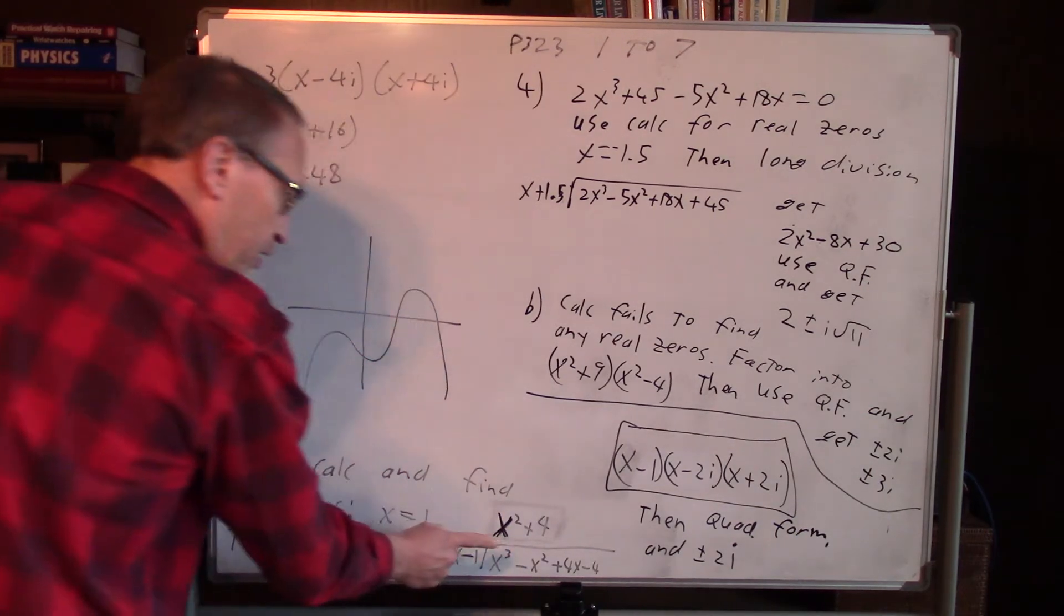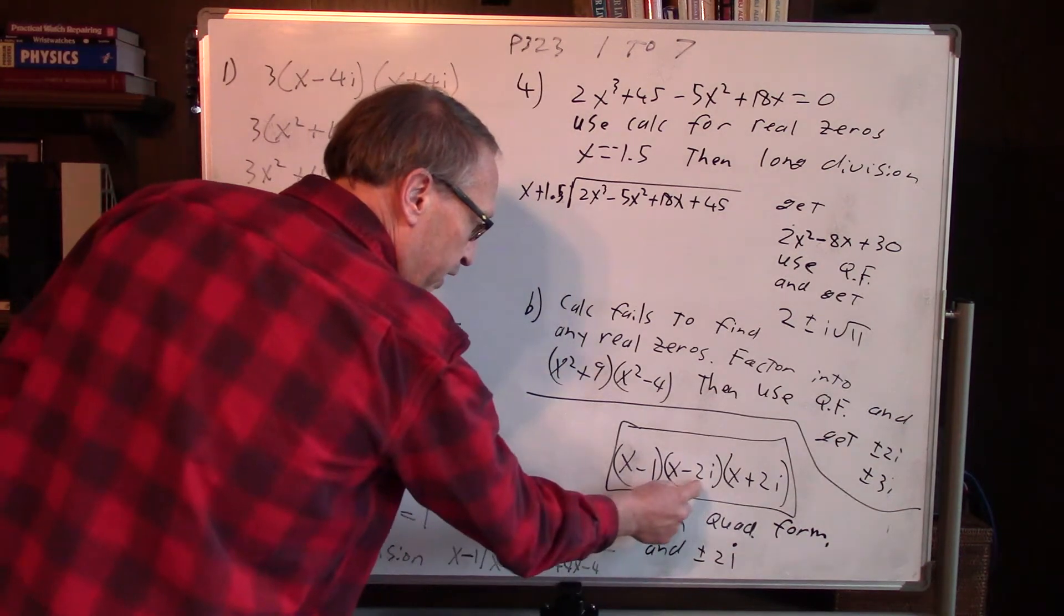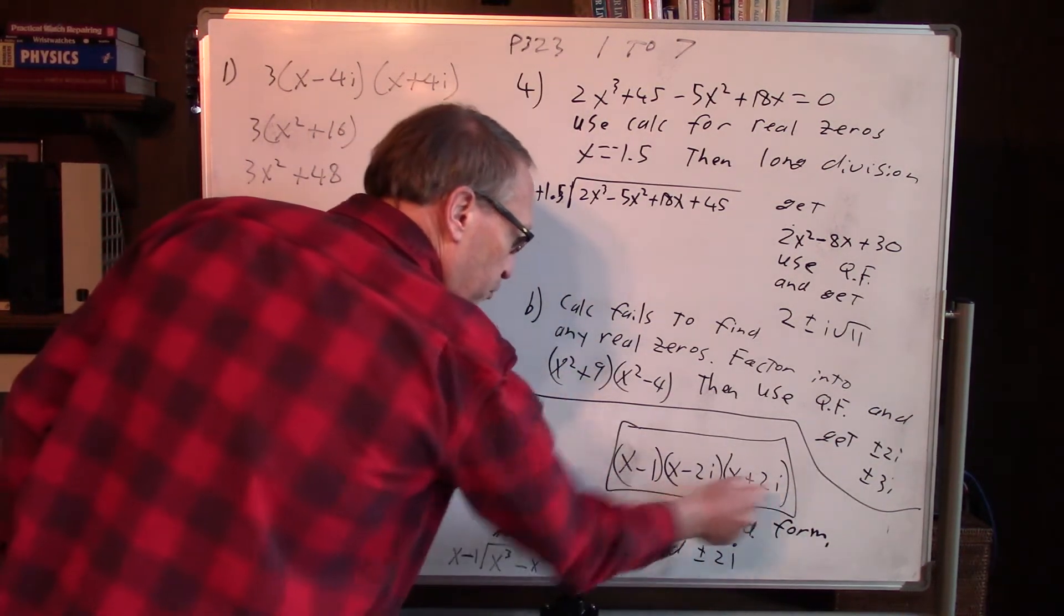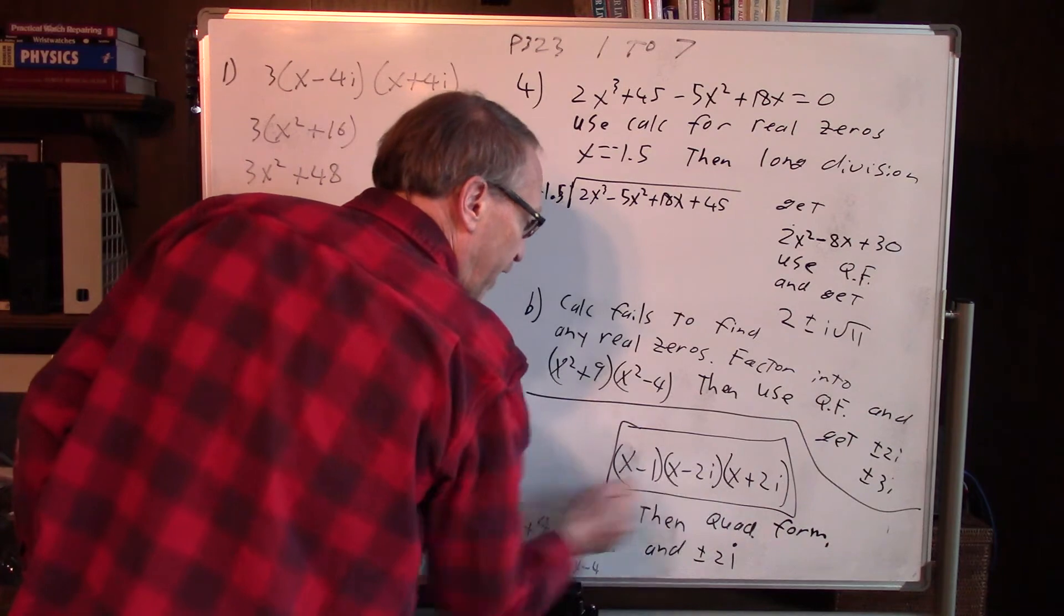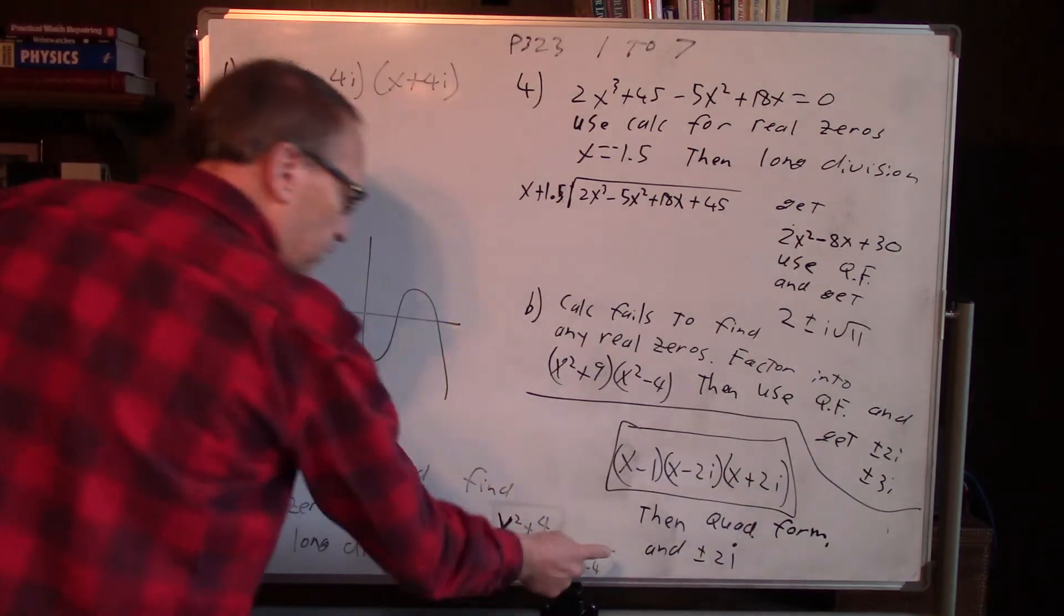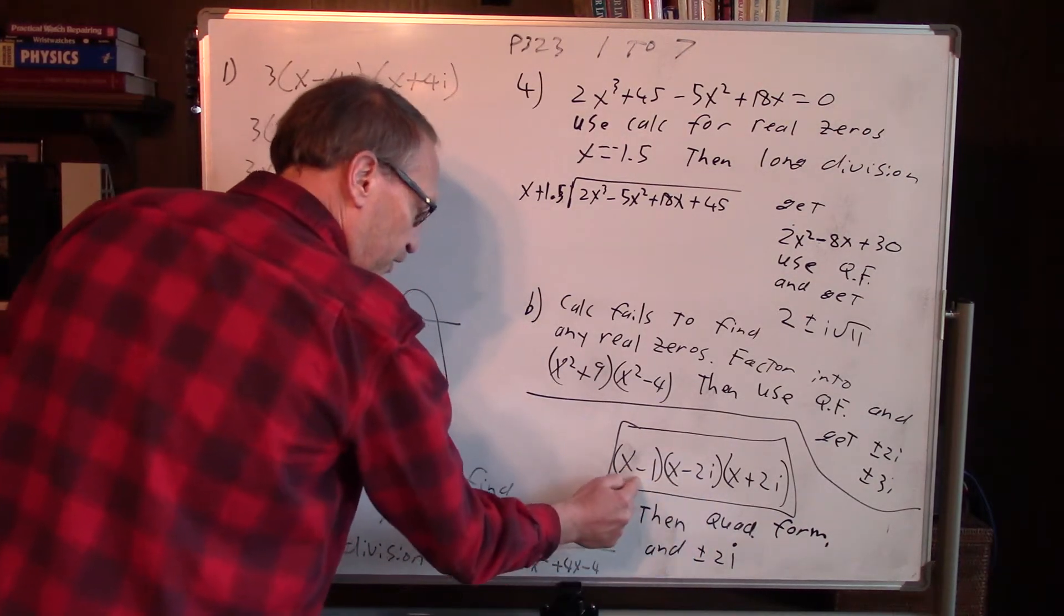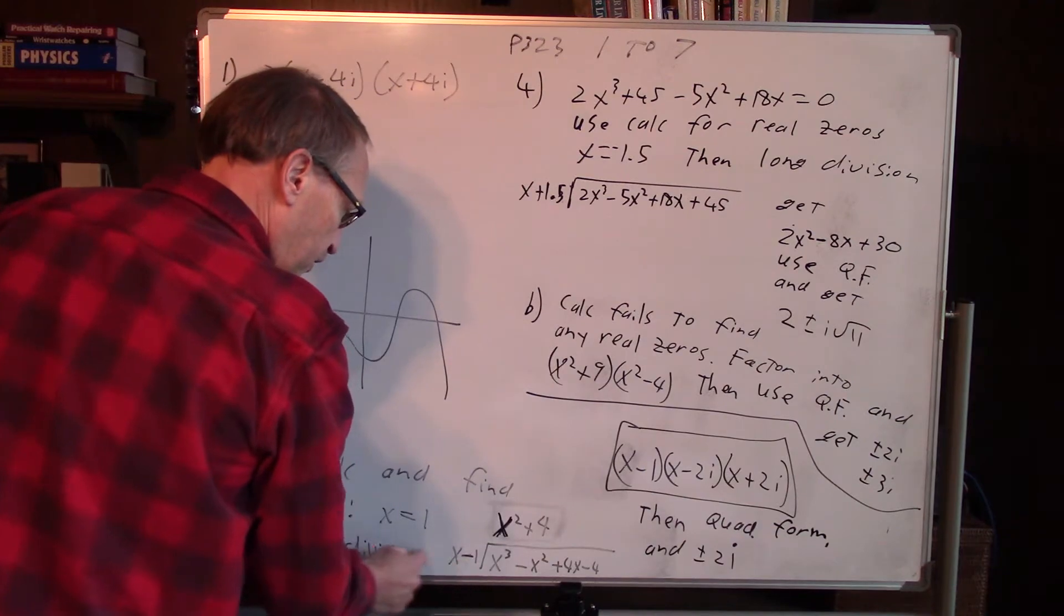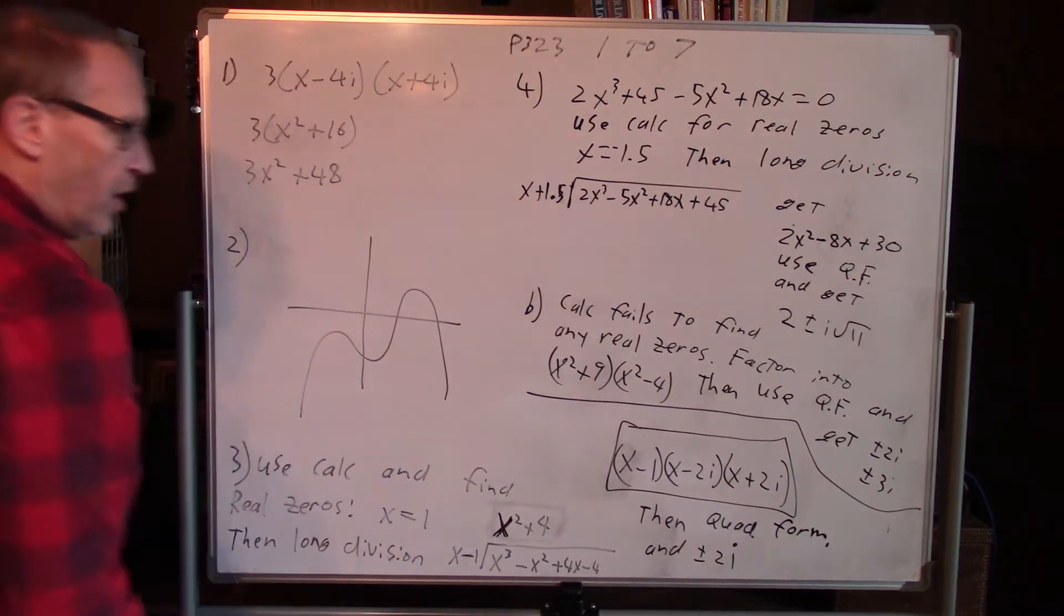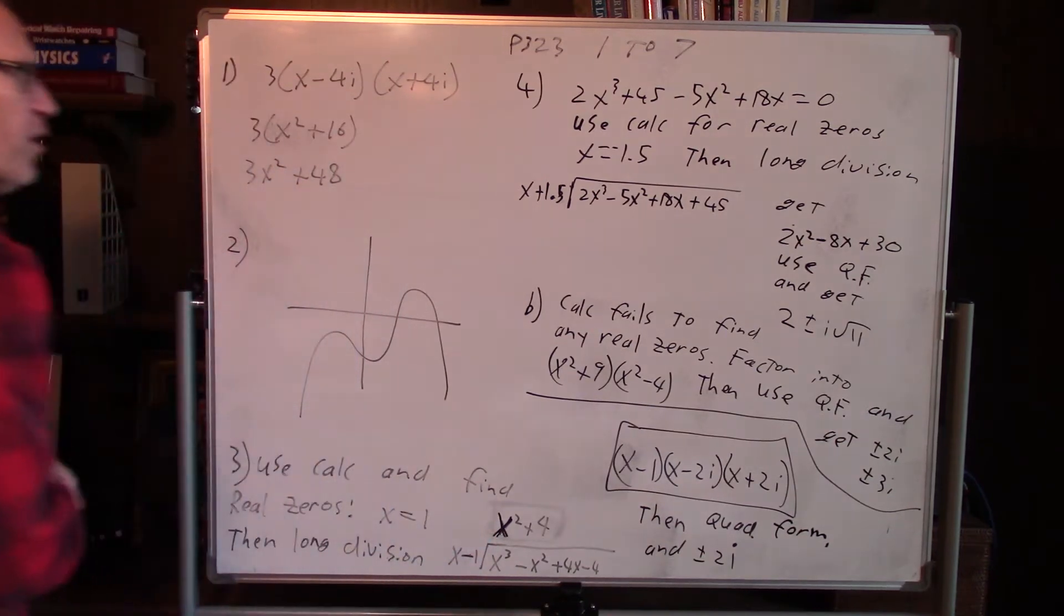Then you'll get a quadratic left over of x squared plus 4. Use the quadratic formula, and you'll get plus or minus 2i. So then that's your completely factored form right there. x minus 1 from the real zero, x minus 2i and x plus 2i from the quadratic formula.